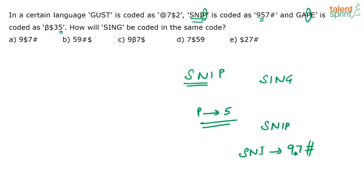So, when you look at the word SNIP, S, N, I, P. I can say that the code for S, N, I is 9 and 7 hash. Basically, these three are there as the code for these letters S, N, I. Now, don't try to find out which is the code for S, which is the code for N, which is the code for I. That is not required here. Next, you need to find out the code for G.